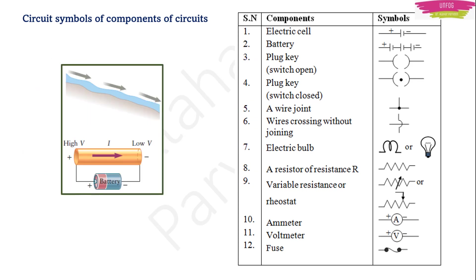Electric current is the flow of electric charges — specifically electrons — in an electric circuit. How does current flow? You can compare it with the flow of water. Just as water flows from a higher point to a lower point, electric current flows from higher potential to lower potential, that is, from the positive to the negative terminal of the battery. An electric circuit is a continuous closed path along which current flows from the positive terminal to the negative terminal of the battery.